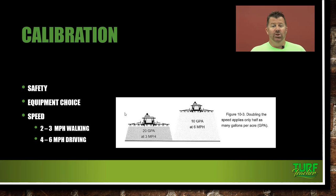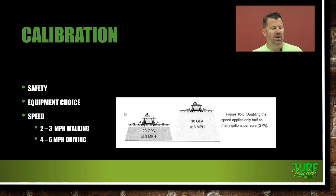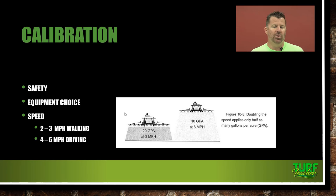Safety: when calibrating equipment, remember you're using equipment that's already had pesticides in it, so wear proper PPE — personal protective equipment — including gloves, eye protection, and boots as the label states. Equipment choice matters too: each piece of equipment is calibrated differently. A boom sprayer requires checking nozzle types for damage. A gun sprayer mounted to a truck has its own calibration process. Keep your speed between 2 to 3 miles per hour walking, or 4 to 6 when driving a tractor or ride-on spreader.